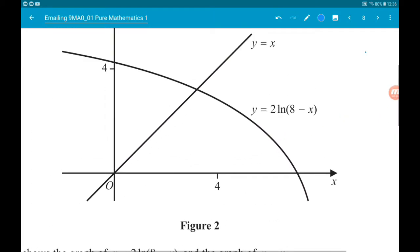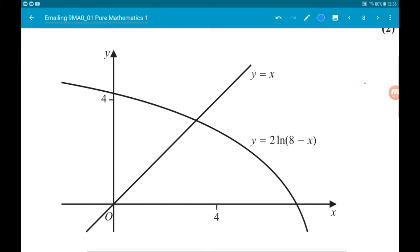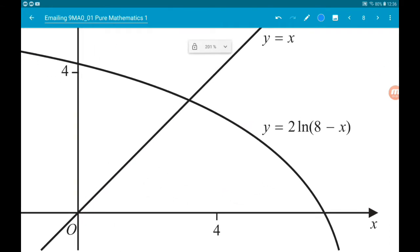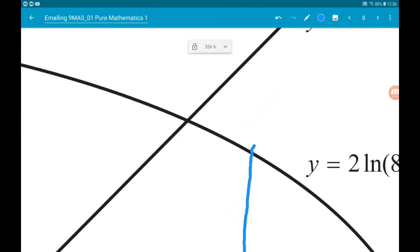So it's only two marks so all that we need to do is a cobweb diagram and see whether or not we converge or diverge. So we're gonna go up from 4 here to the curve, then we're gonna go across to the line, then we're gonna go across to the line, down to the curve.